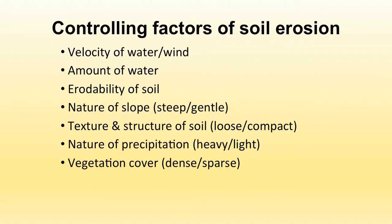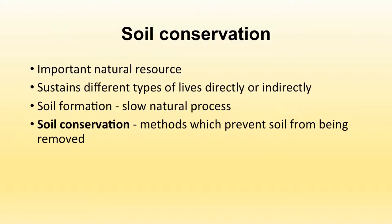The controlling factors of soil erosion are velocity of water or wind, amount of water, erodibility of soil, nature of slope, texture and structure of soil, nature of precipitation, and vegetation cover.